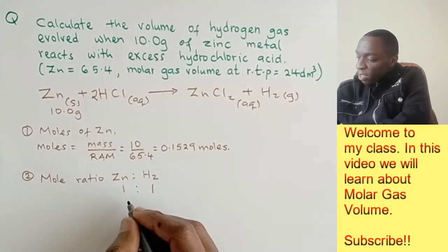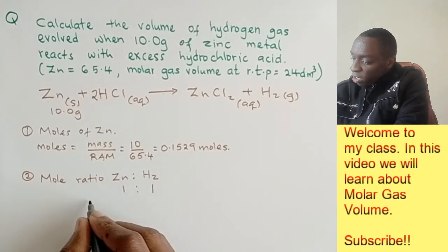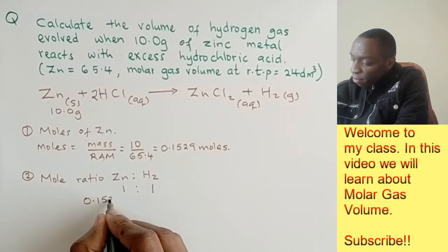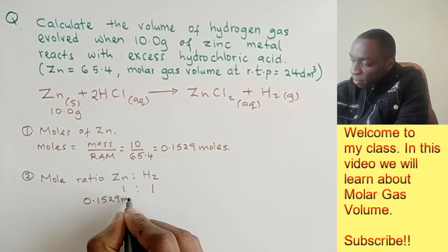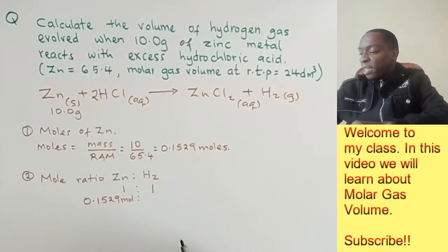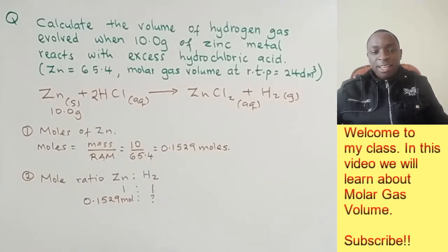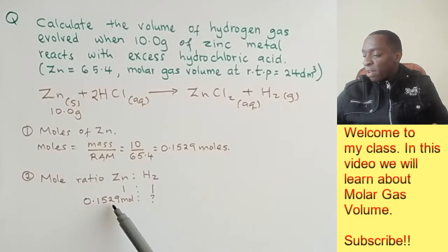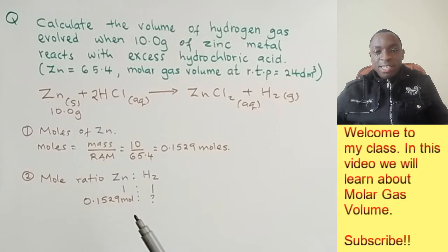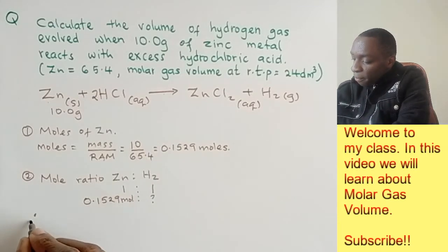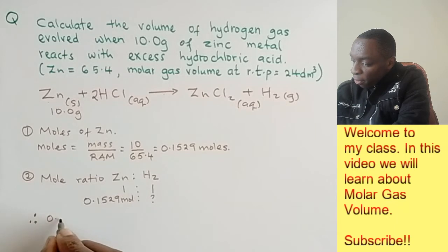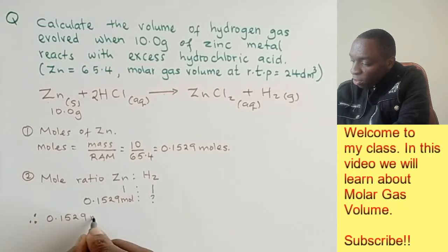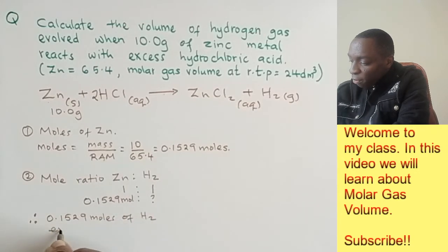From this, the next thing is to say: if we had 0.1529 moles of zinc, how many moles of hydrogen would that be? This is a simple case of cross multiplication. We take 0.1529 multiply by 1, divide by 1. So that is the same answer. Therefore, 0.1529 moles of hydrogen gas were evolved.